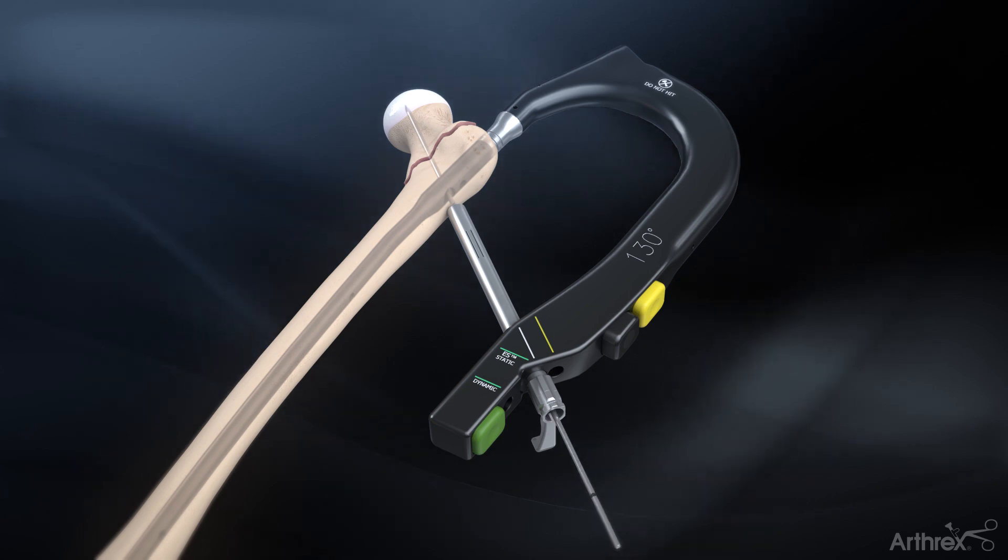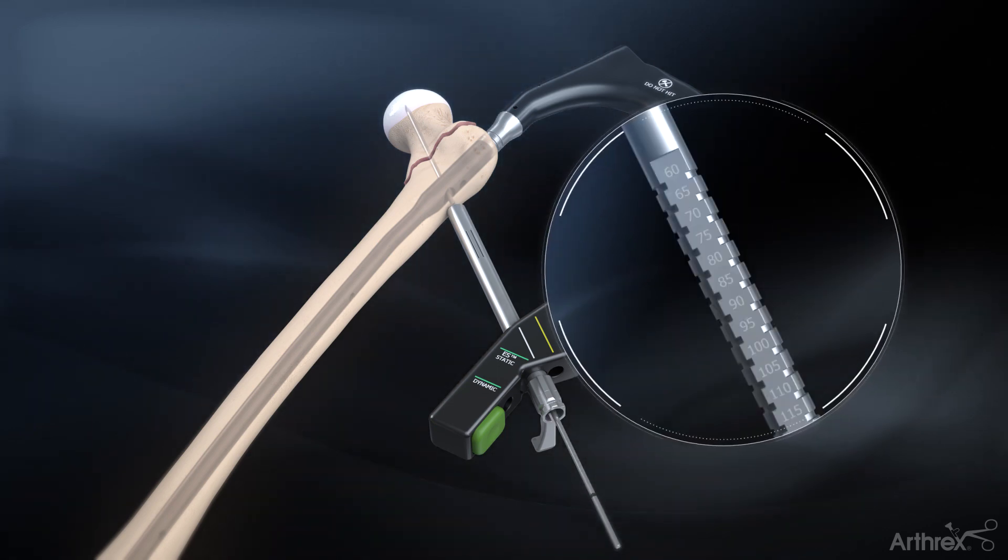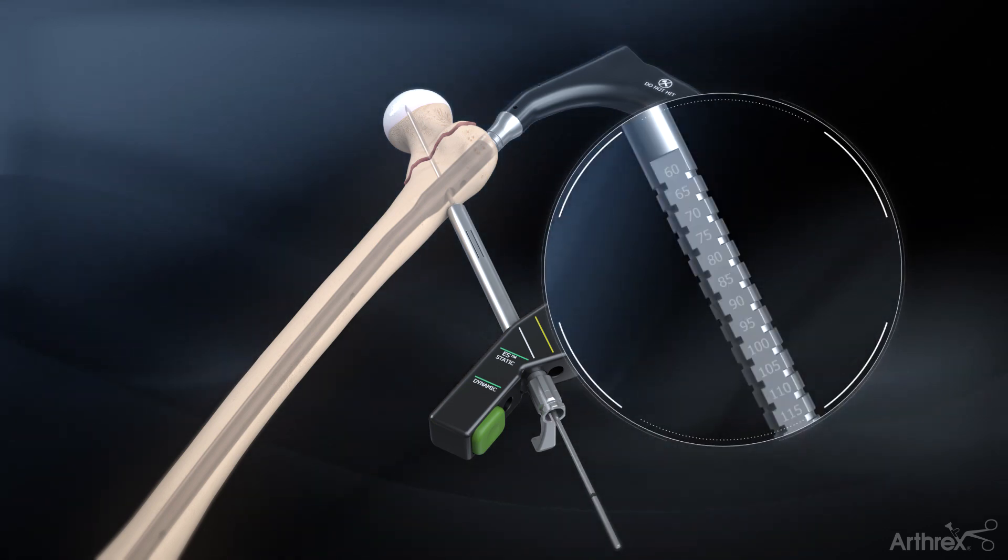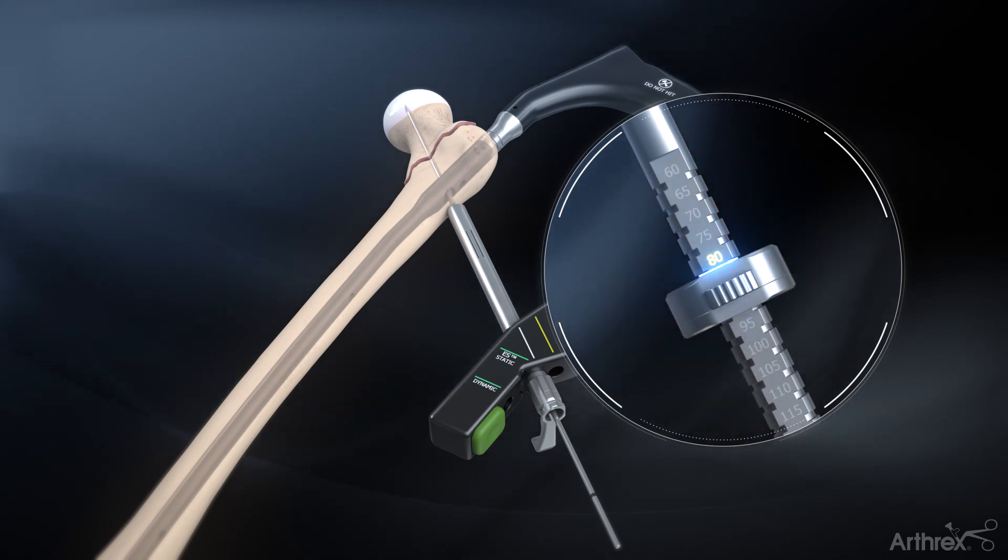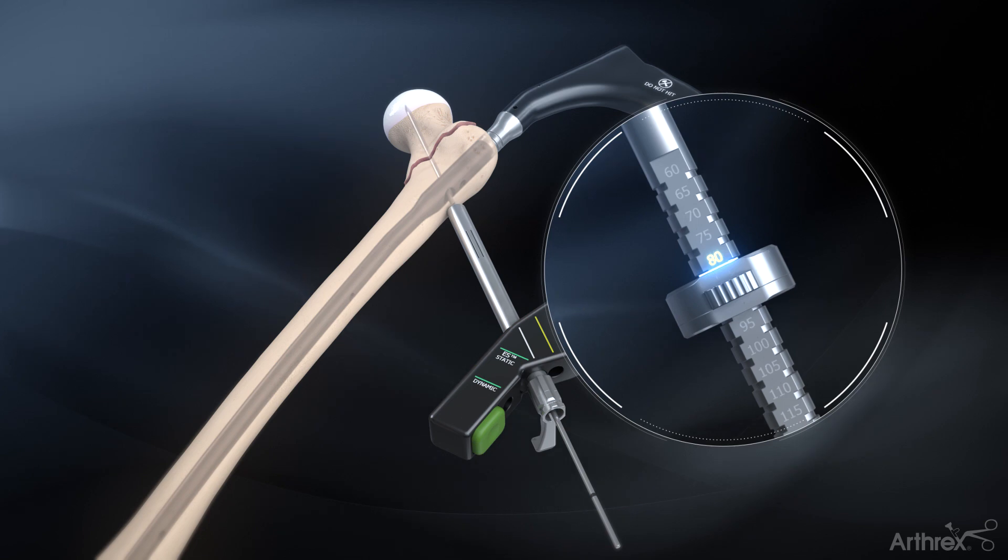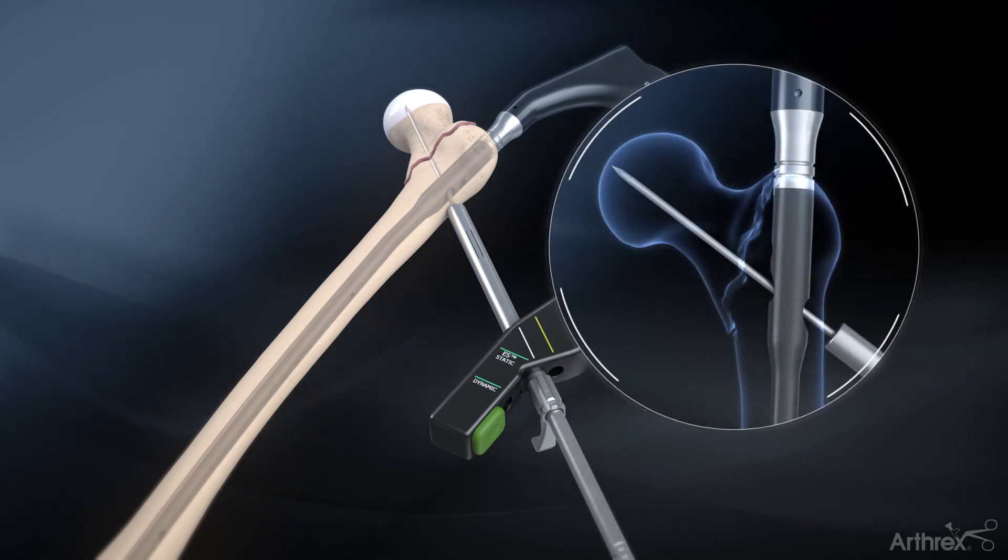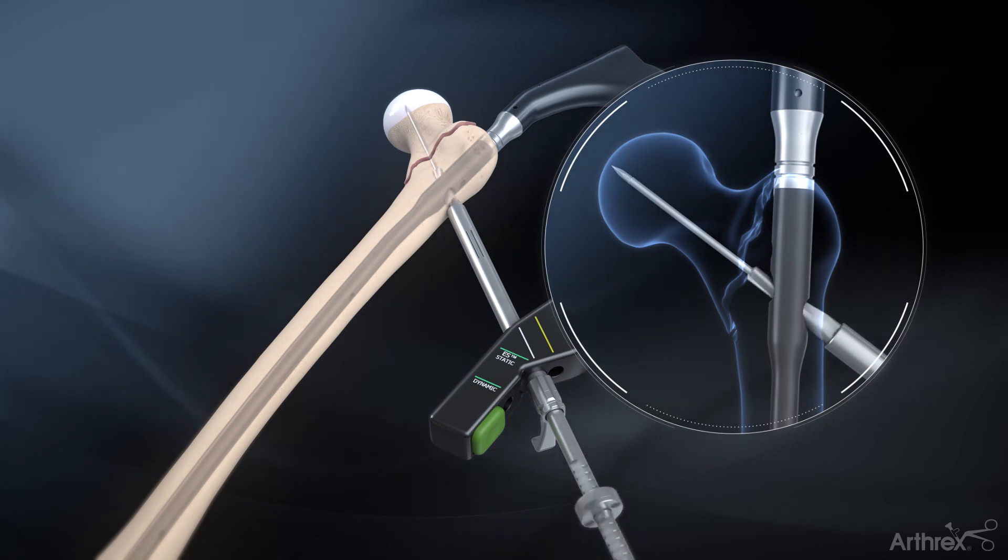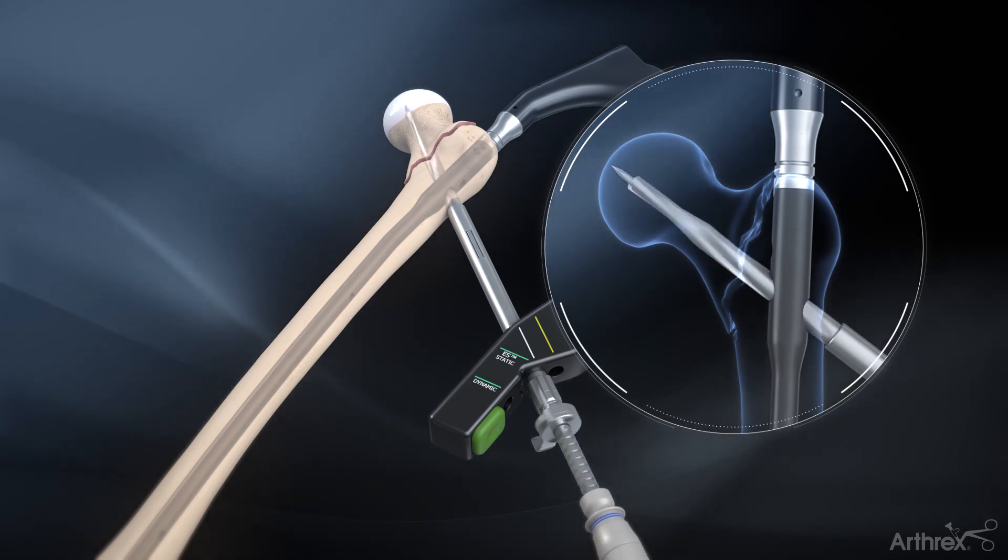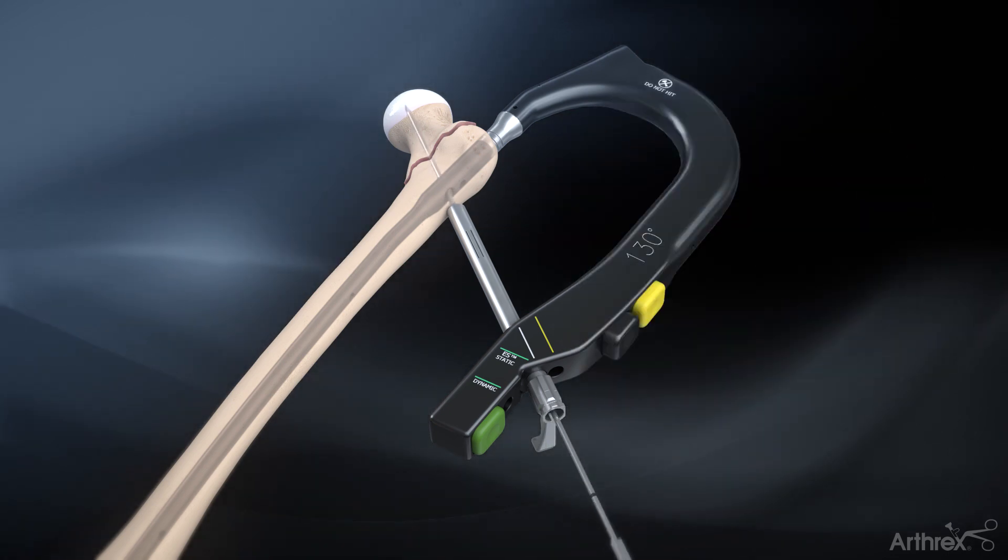Remove the 3.2 mm pin guide. Set the adjustable stop on the 10.3 mm cannulated lag screw drill at at least 5 to 10 mm less than the measurement, so the tip of the drill does not pass beyond the guide pin. Insert the 10.3 mm cannulated lag screw drill over the guide pin and drill into the femoral head until the depth stop contacts the sleeve.